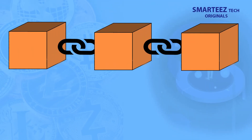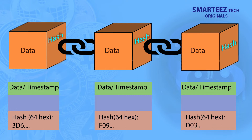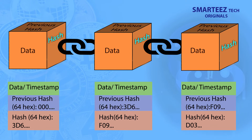Each block of a blockchain contains three main pieces of information. First, data. Second, a unique 64 hexadecimal value containing numbers and alphabets called a hash, which is generated based on the data stored in the block through an encryption algorithm. Third, another 64 hexadecimal number which is the hash of the previous block. If the data in a block changes, then the hash changes, making the block invalid in the chain. To prevent this, the data in a block can never be changed once it's added to the blockchain.